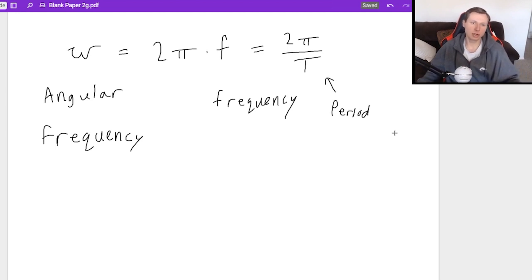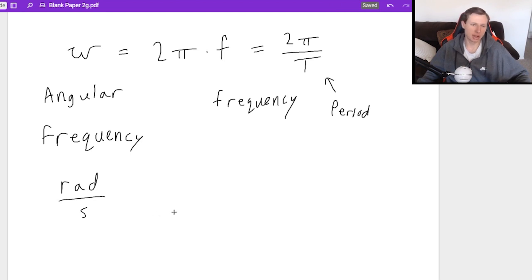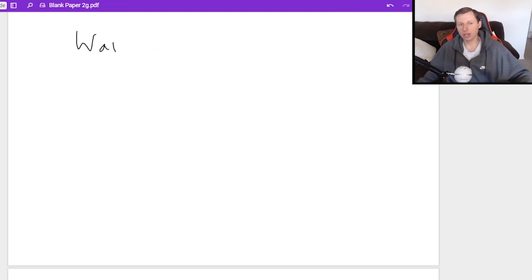And the angular frequency is kind of hard to understand in terms of wrapping your head around it. It's not as easy as, let's say, frequency or period, where I can give a real world example. But where angular frequency comes into play is in the wave equation, which I'll say in two seconds, but just first, real quick, angular frequency has units of radians per second. And you don't have to know why, you just have to memorize it. But now I want to talk about the wave equation.